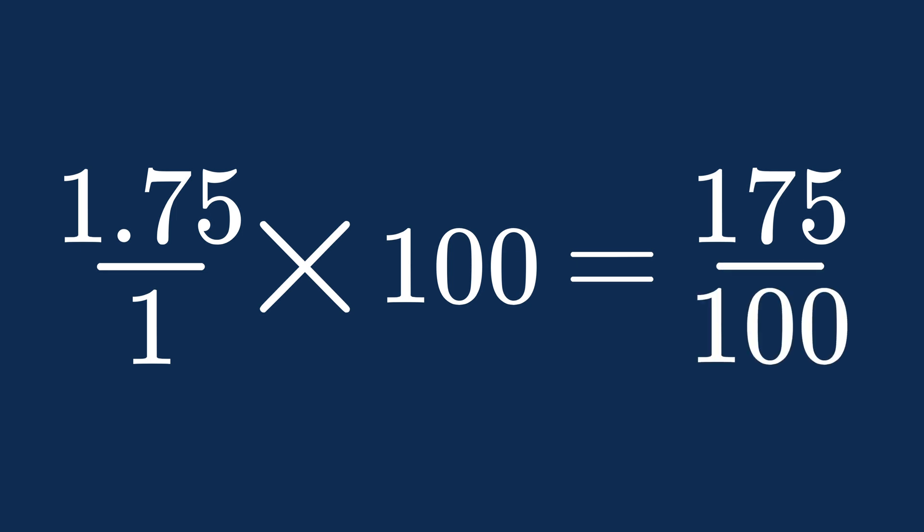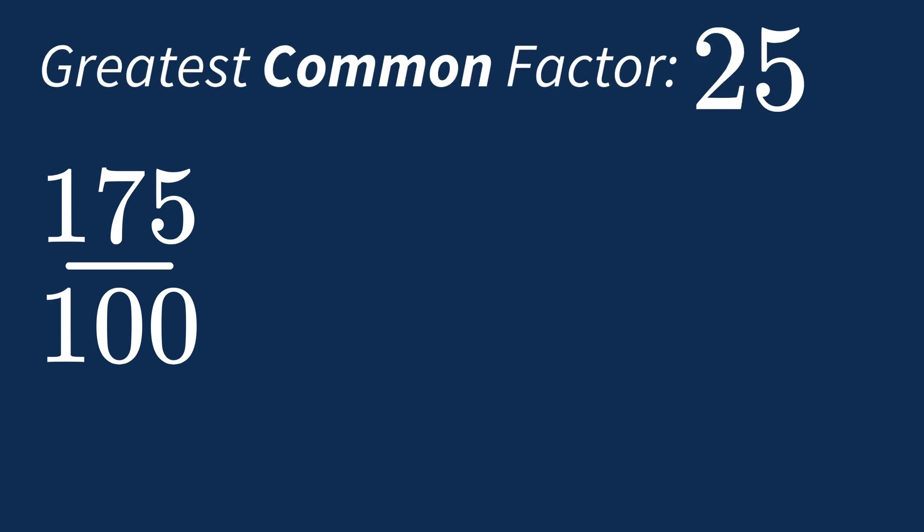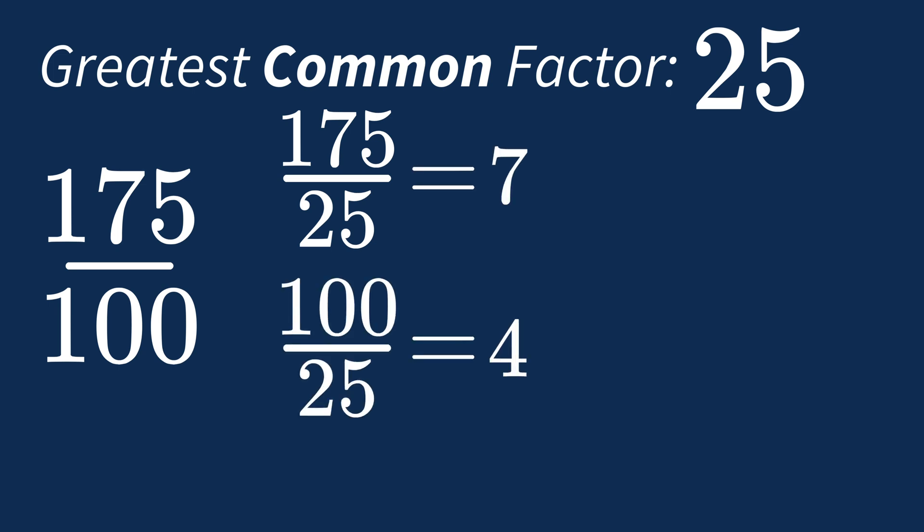Now we can simplify the fraction by dividing both the numerator and denominator by their greatest common factor of 25. Dividing 175 by 25 gives us 7, and dividing 100 by 25 gives us 4. So the fraction simplifies to 7 over 4.